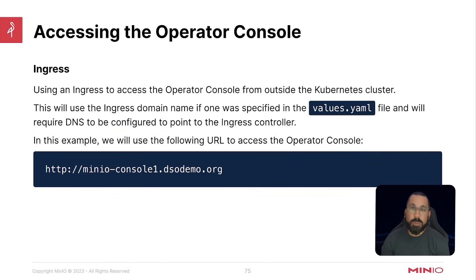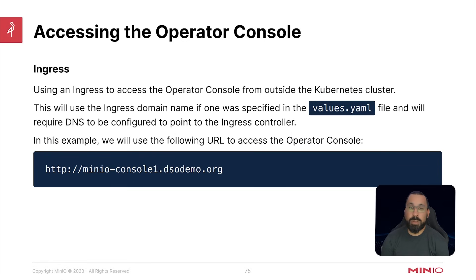The way we will be using in the demo is that we defined an ingress in the values YAML and already have DNS pointed at this host. The URL is HTTP - we do not turn on TLS, so this is bare HTTP. TLS is another course we'll be coming out with if you want to integrate certificates into your deployments. In this case it's http://minioconsole1.dsodemo.org, and that's how we'll access this environment.